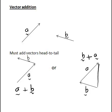In either case we then end up with a vector C that starts from the tail of the first vector in our addition and has its arrow head at the head of the second vector. So that is how we can do vector addition geometrically.